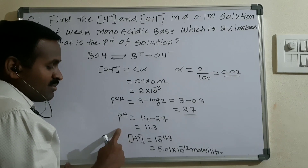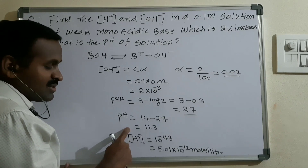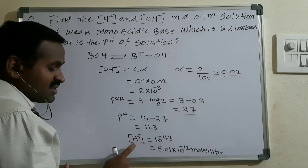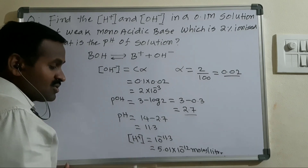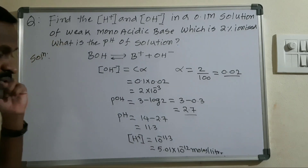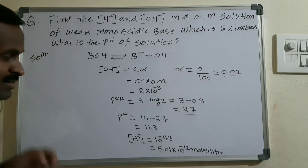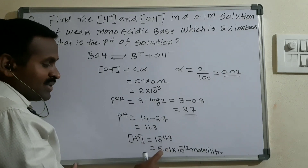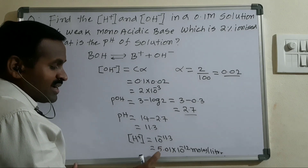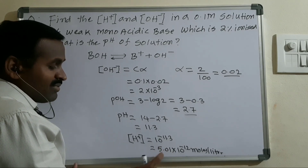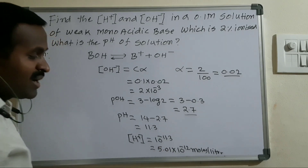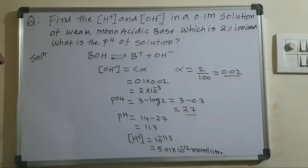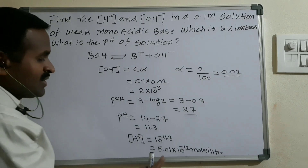From the pH value we can find H⁺ ion concentration: −log[H⁺] = 11.3, so H⁺ ion concentration = 10⁻¹¹·³ = 5.01 × 10⁻¹² moles per liter.